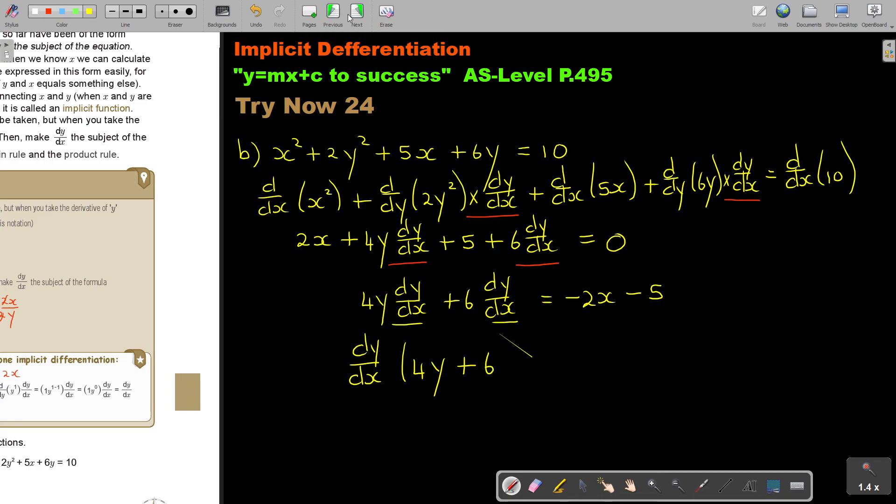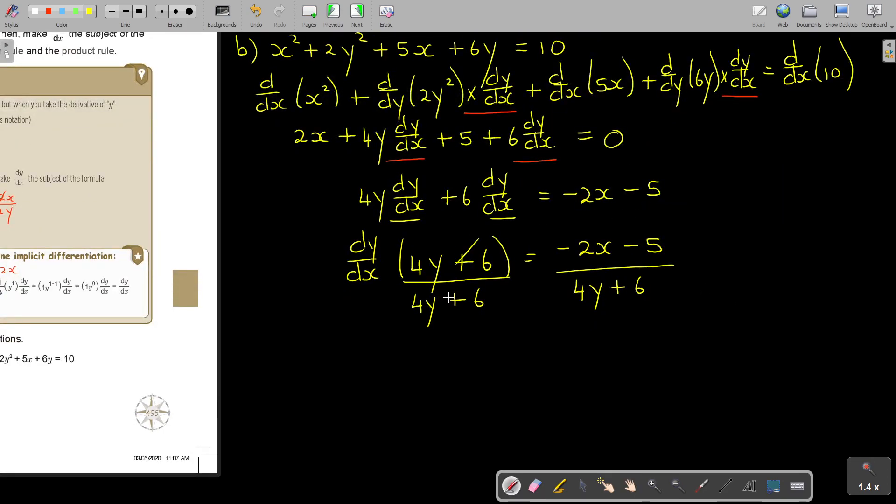Let me just get that correct. And that's negative 2x minus 5. And I divide by 4y plus 6. So basically, my final answer, because this will cancel out, is just dy over dx equals negative 2x minus 5 over 4y plus 6. It's not very difficult. But first get used to it.